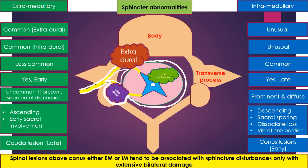Spinal lesions above conus, either extramedullary or intramedullary, tend to be associated with sphincter disturbances only with extensive bilateral cord damage.